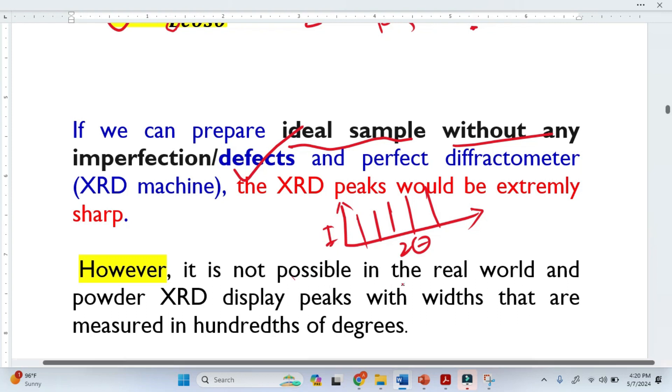It is not possible in the real world. And this is why powder XRD displays peaks like this. This is the 2θ here, this is the intensity. This is why we have peaks having widths. This was the importance of peak width in XRD analysis.